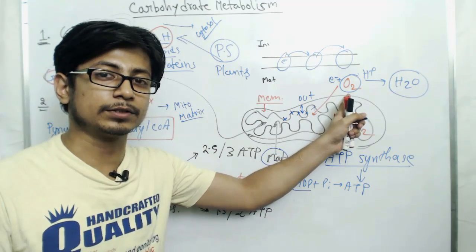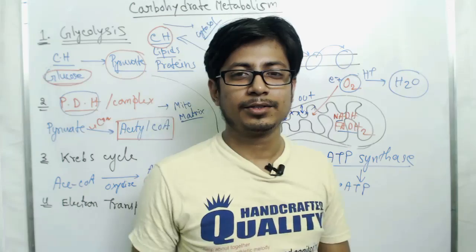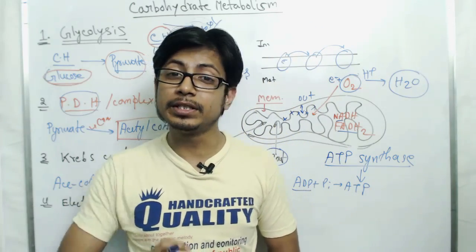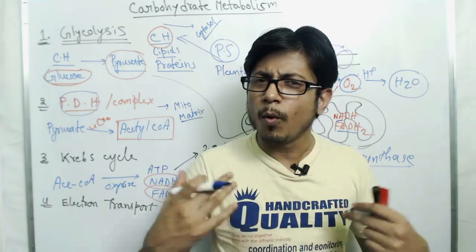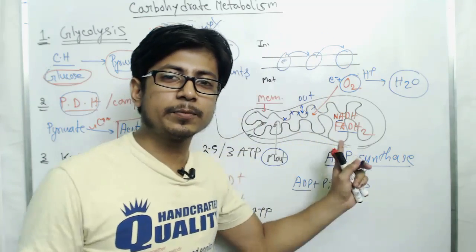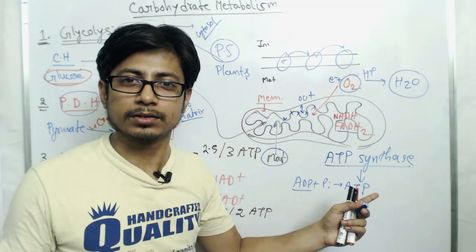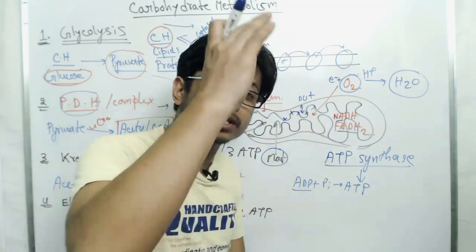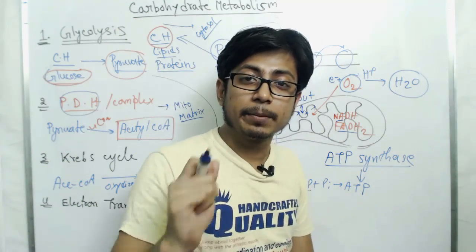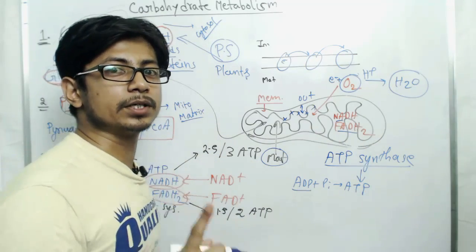We always talk about aerobic respiration — without oxygen we cannot survive. Why? Because we cannot produce energy without it. And why is oxygen required to produce energy? Because oxygen acts as the terminal electron acceptor during the electron transport chain.